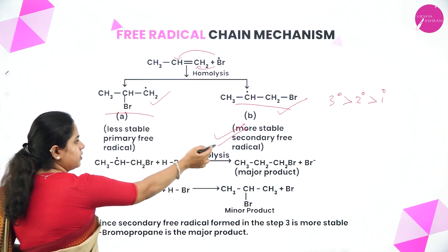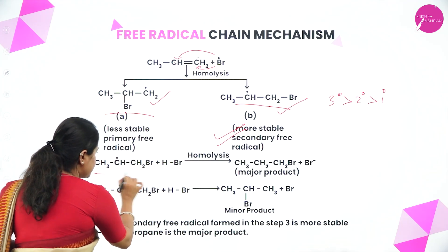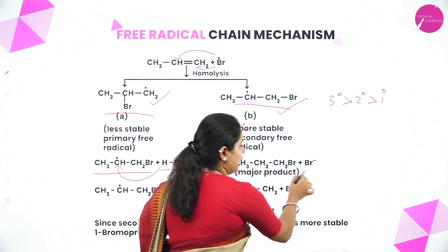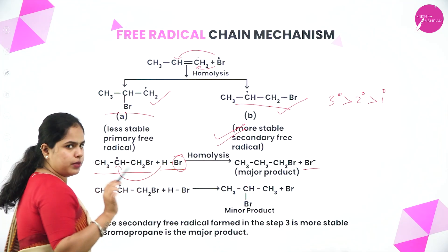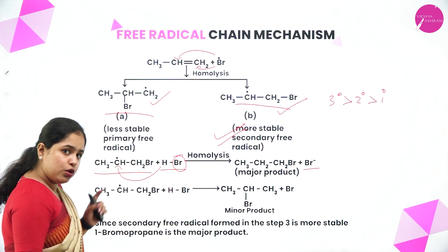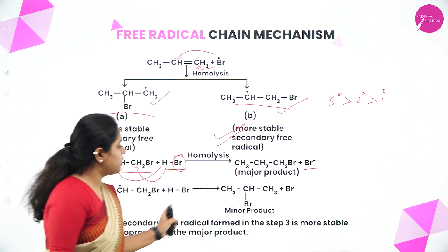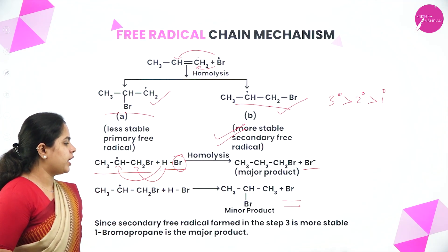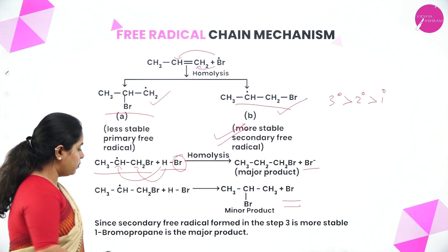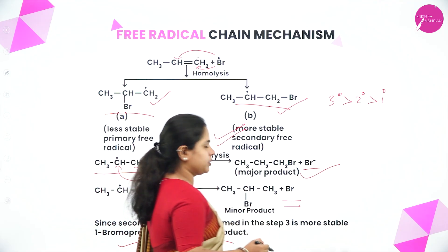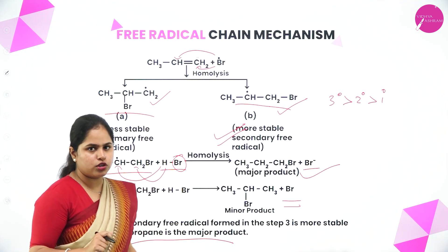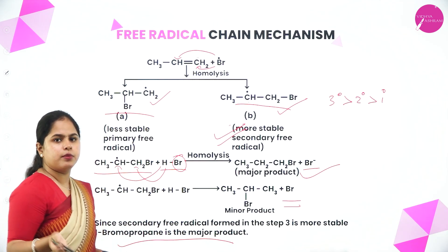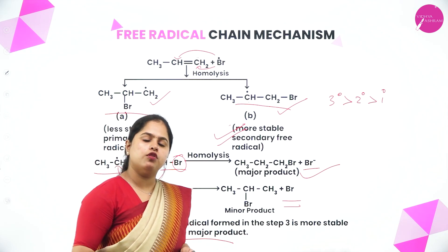From the more stable secondary free radical (CH3–CHBr–CH2•), HBr is added: hydrogen attacks the radical carbon to give CH3–CH2–CH2Br and Br•, which is 1-bromopropane — the major product following anti-Markovnikov addition. The minor product (from the less stable pathway) would be CH3–CHBr–CH3 (2-bromopropane). Since the secondary free radical is more stable, 1-bromopropane is the major product.